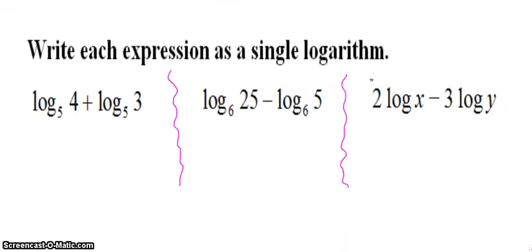So what we do with these properties is we condense or write expressions as a single logarithm. And then we also expand, which is essentially going the opposite direction. So for all these, just keep in mind what your properties are. So if we have a plus, then it's going to multiply my arguments. So I'm still going to have my log base of 5. And then 4 times 3 is 12.